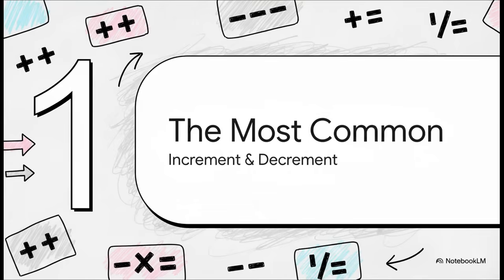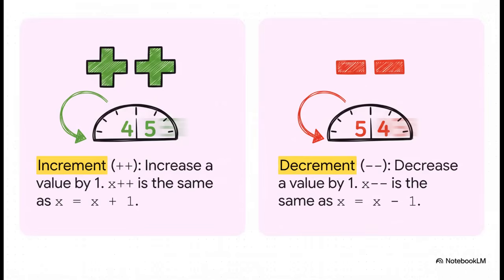Okay, so those were the basics, but now let's get into the two shorthand operators that you are going to see and use constantly. I mean, all the time, especially when you start working with loops. Let's talk about increment and decrement. These guys are the ultimate shortcuts. The double plus, plus plus, it just means add one. It's literally the shortest possible way to write x equals x plus one.